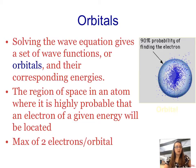So when we solve this wave equation that Schrödinger developed, it actually gives us a set of wave functions, which are also known as orbitals. And it also gives the corresponding energy of the orbital. Now, each orbital describes the distribution of the electron density. So that is the region of space in an atom, where it is very highly probable that we can find an electron.